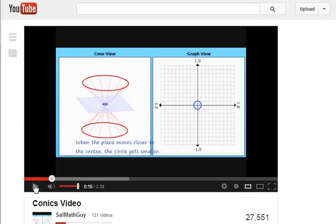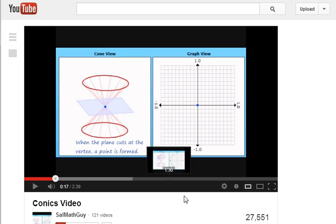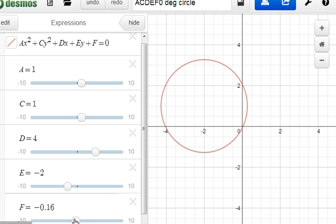If we let this video play a little more, it'll show us a degenerate case. So there it is. The circle no longer is a circle. There is a point when the slice of the cone, of the double cone, only makes a point.